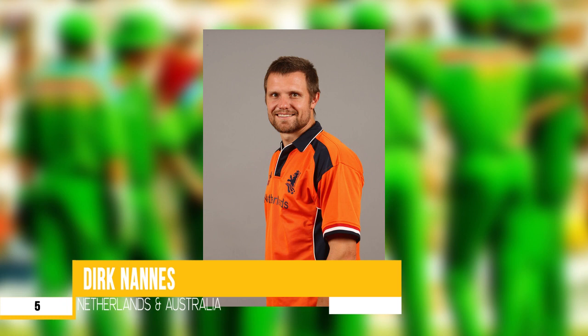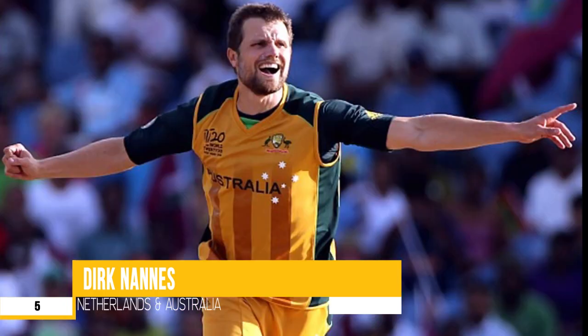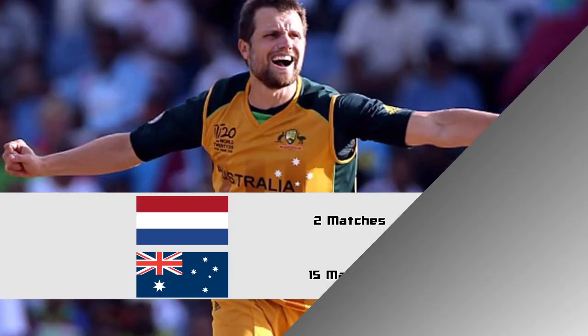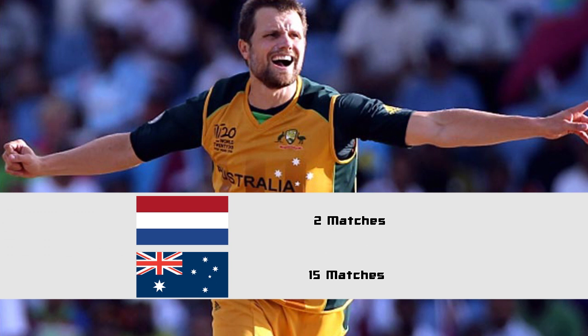Number five: Dirk Nannes. Dirk Nannes is a Dutch-Australian left-arm fast bowler who shot to fame playing for the Delhi Daredevils in the Indian Premier League. He was later called up by the Netherlands side, where he made his T20 international debut against England. Nannes represented the Australian side in the 2010 ICC World Twenty20 competition.